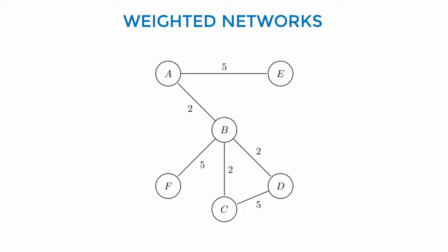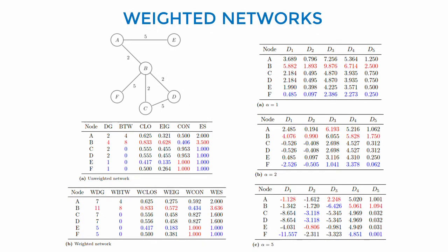But if we play a little bit with the alpha coefficient of distinctiveness, we see that the rankings change. You see it on the tables that are on the right. With alpha equal to 1, B is the most important node, and the least important is F. The picture is different if we consider alpha equal to 5.